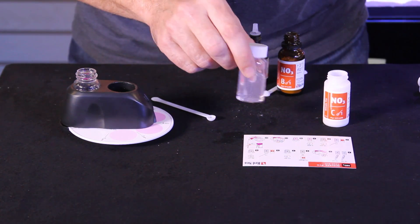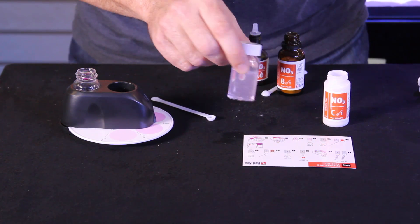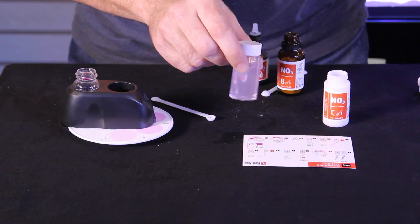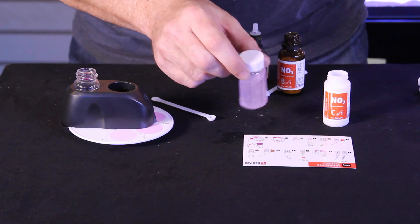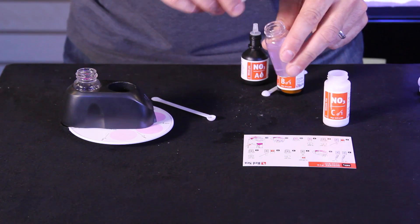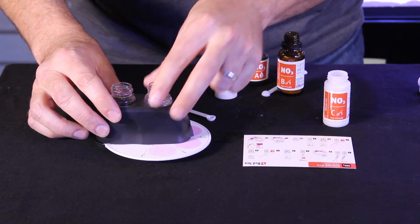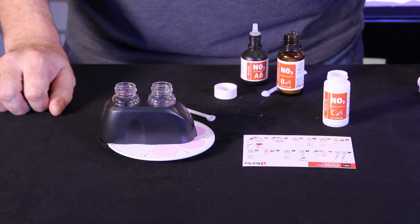And then we're going to place this vial in our color comparison wheel. Set a timer for nine minutes and then we'll come back and check our results. Cap it. There we go. We'll come back and look at the results in nine minutes.